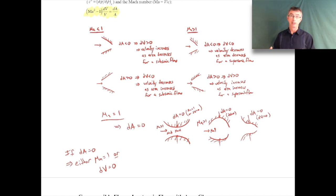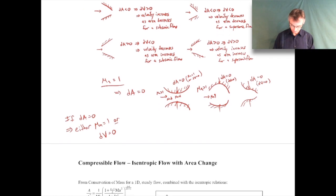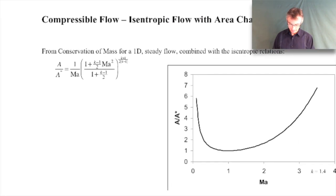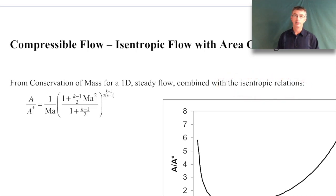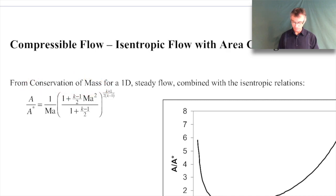You might ask: what does that minimum area have to be? We can actually calculate it by combining conservation of mass with our isentropic relations. The derivation details are in the book-style notes, but combining them gives this expression: A over A*, where A is the area at a given Mach number and A* is the area you'd need to get down to in order to reach sonic conditions (M = 1). The starred notation indicates conditions at Mach 1.